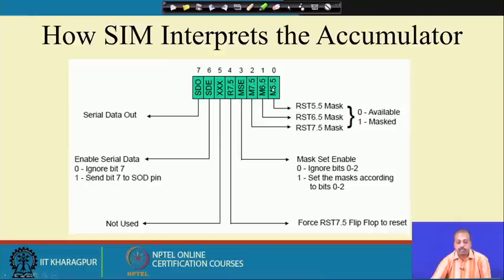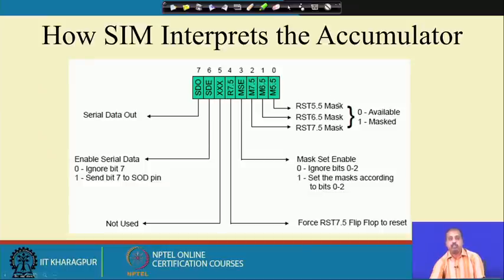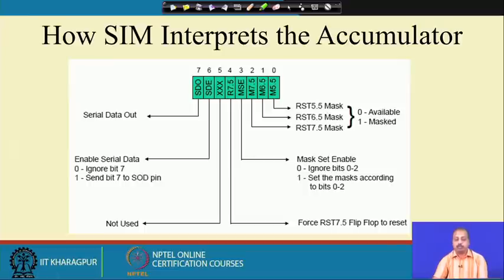Bit 0 is the mask for RST 5.5, bit 1 for RST 6.5, and bit 2 for RST 7.5. If the mask bit is 0, the interrupt is available; if it is 1, the interrupt is not available. Whether we want to set this mask or not is controlled by the MSE bit — if this bit is 0, it ignores bits 0 to 2; if it is 1, it sets the masks according to bits 0 to 2.